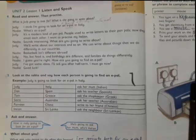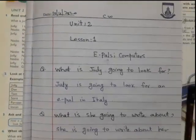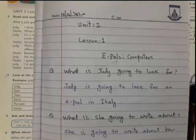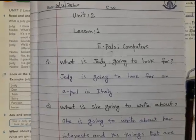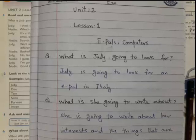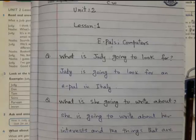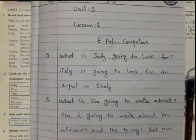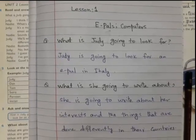So I'm going to give you the answer to what is Judy going to look for. Open your copies and prepare the page like this. You have to mention the date, classwork, unit 2 lesson 1, and the name of the lesson. Then you have to write the answer like this: What is Judy going to look for? Judy is going to look for an e-pal in Italy.